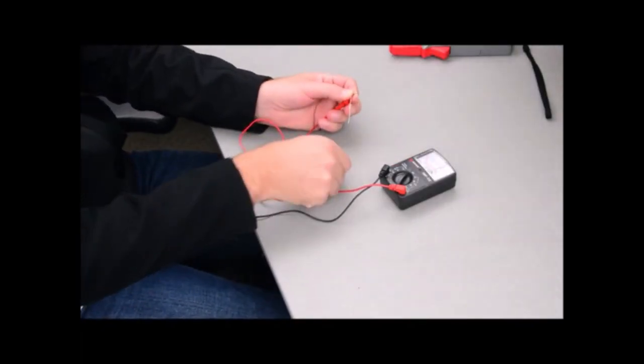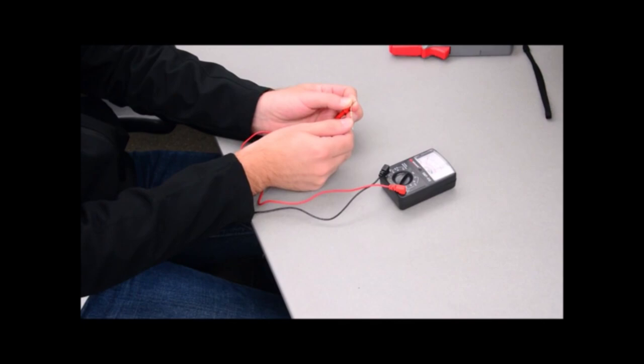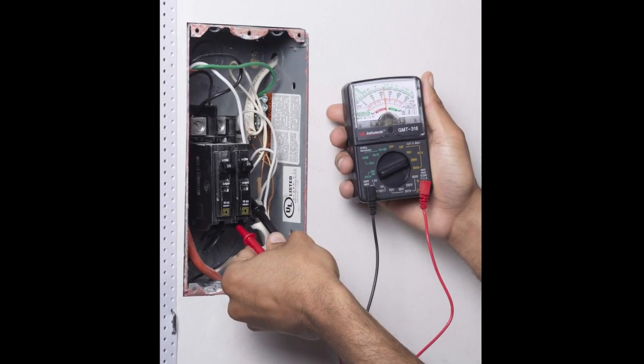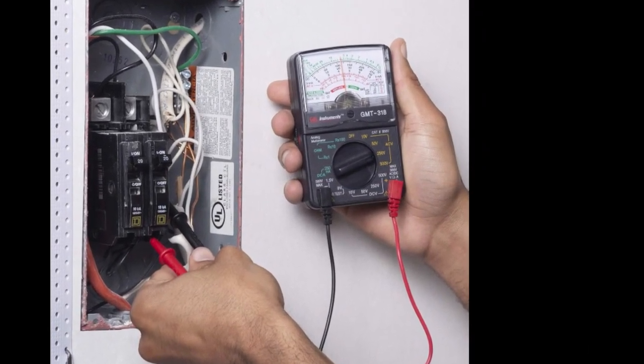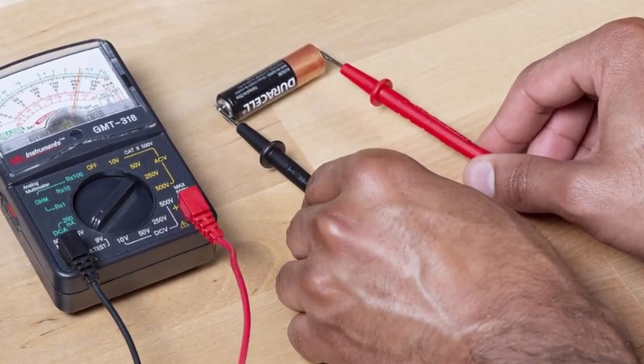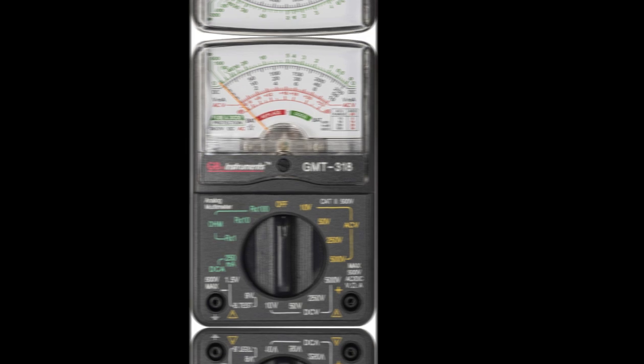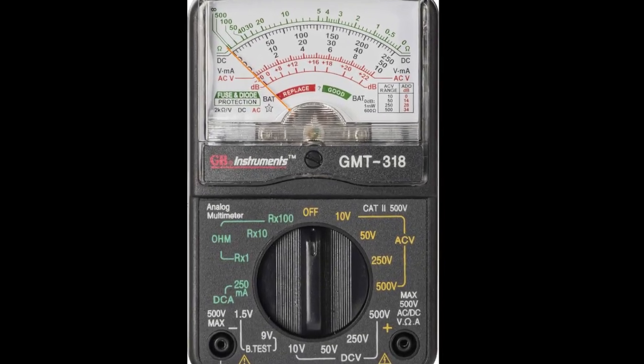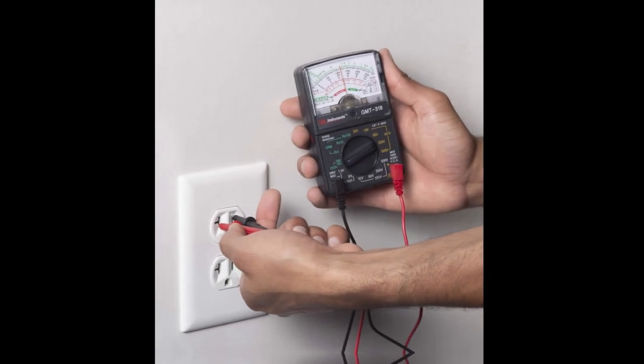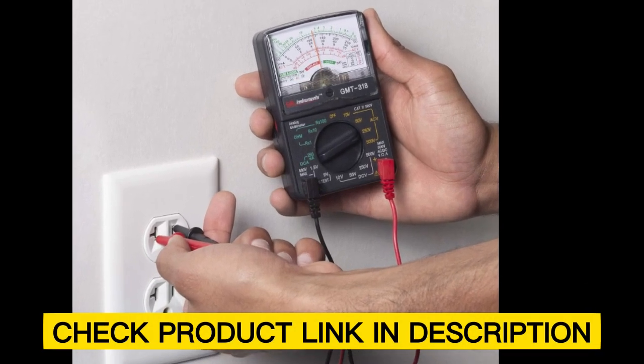It supports essential measurements including AC-DC voltage, DC current, and resistance, and operates reliably down to 18 degrees Celsius. Its analog display provides clear readouts, making it a great option for users who prefer traditional meters. Simple, durable, and efficient, the GMT-318 is a practical choice for basic troubleshooting and DIY electrical projects. Check the product link in the description.